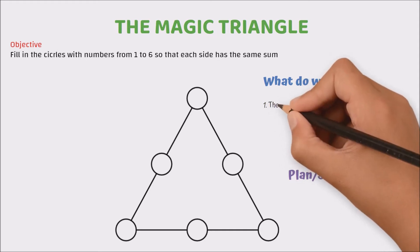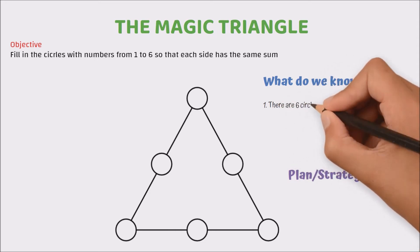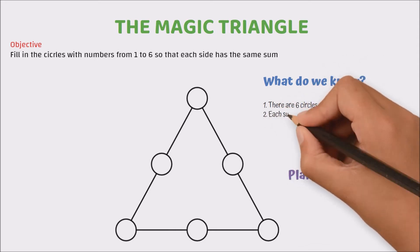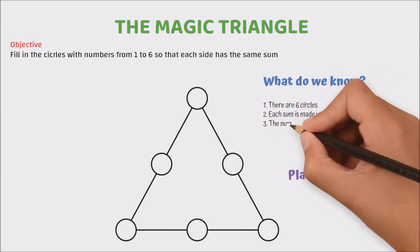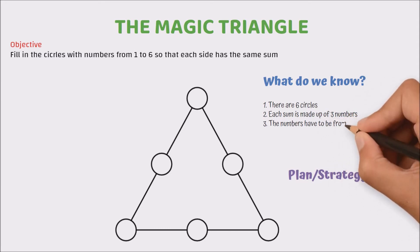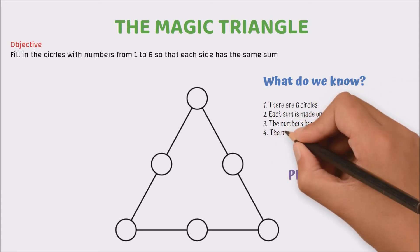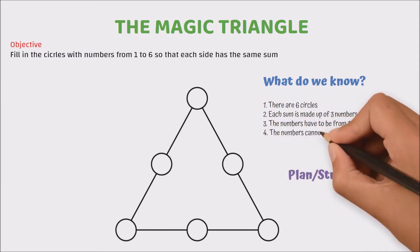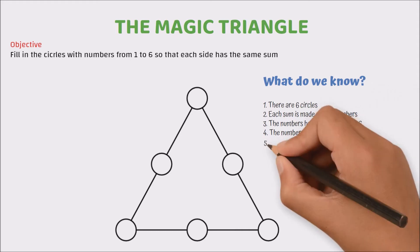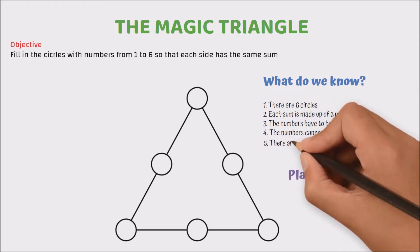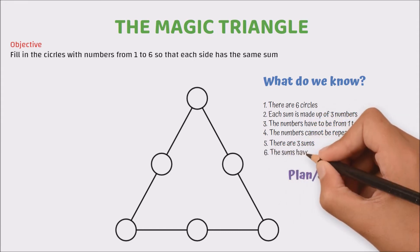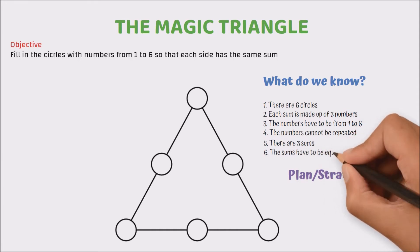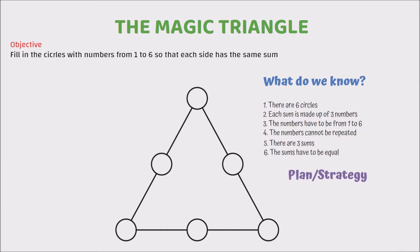Number one, there are six circles. Number two, each line is made up of three circles so each sum is made up of three numbers. Number three, the numbers have to be from 1 to 6. Number four, the numbers cannot be repeated. Number five, there are three sums. Number six, the sums all have to be the same. So you see how much things we can write down just by looking at the problem itself.